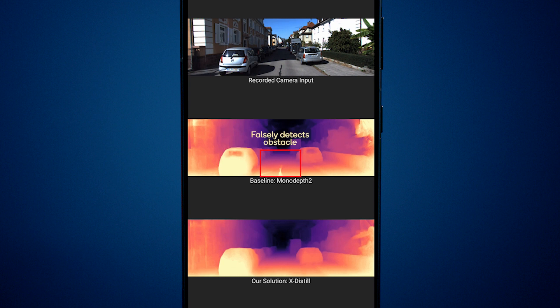The baseline also suffers from texture copy and can falsely detect obstacles on the road, as shown in this example. xDistil does not have this problem and predicts continuous depth values on the road surface, thanks to its enhanced semantic scene understanding capability.